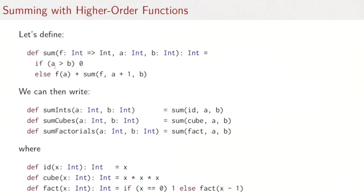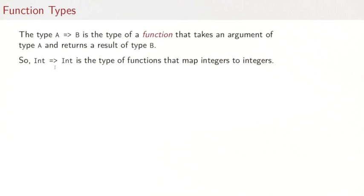And finally, sum factorial is sum of fact and a, b, where the fact function is the factorial function. What we've done effectively is reused the pattern that defines the sum function so that we had to write that only once. And we could reuse it in the three definitions of the particular sums.